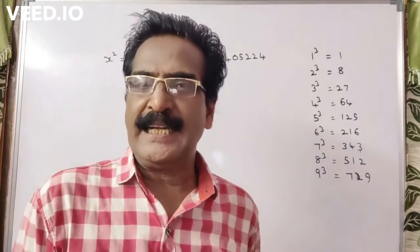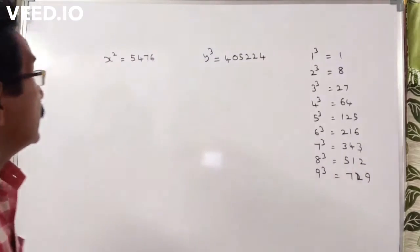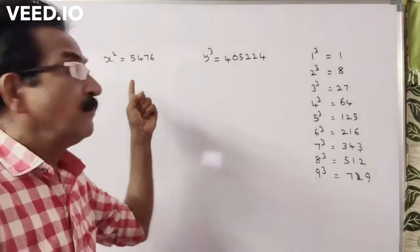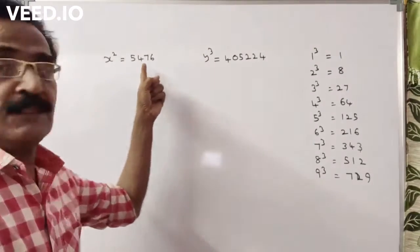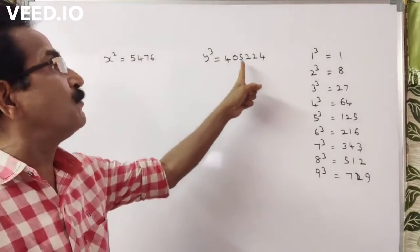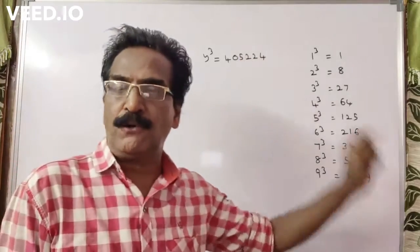Hi friends, good morning. Let us see the next problem. x square is equal to 5476 and y cube is equal to 405224.